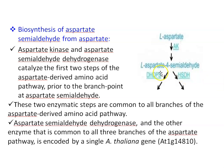Next is the biosynthesis of aspartate beta-semi-aldehyde from aspartate. Aspartate kinase and aspartate semi-aldehyde dehydrogenase enzymes catalyze the first two steps of the aspartate-derived amino acid pathway, prior to the branch point at aspartate semi-aldehyde. These two enzymatic steps are common to all branches of the aspartate-derived amino acid pathway. Aspartate semi-aldehyde dehydrogenase, an enzyme common to all three branches of the aspartate pathway, is encoded by a single Arabidopsis thaliana gene 81G14810.